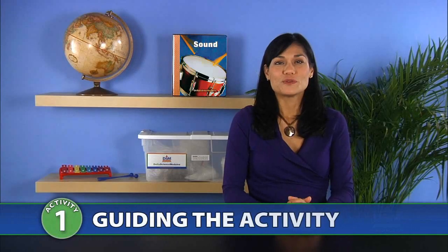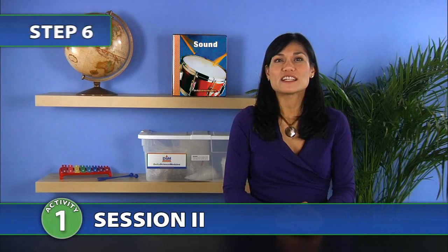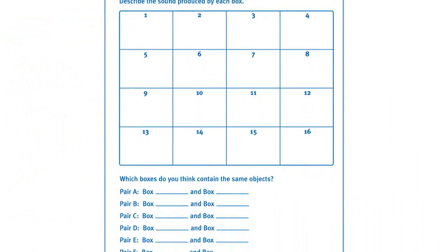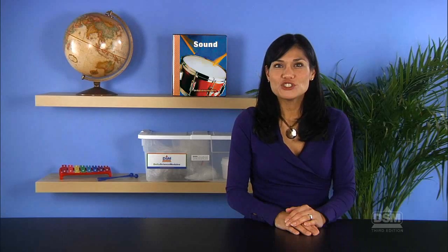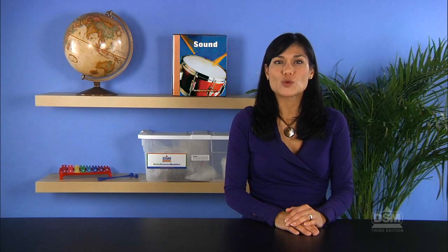To begin Session 2, give each student a copy of Activity Sheet 1, Part B. Point out that the Activity Sheet contains 16 numbered squares.